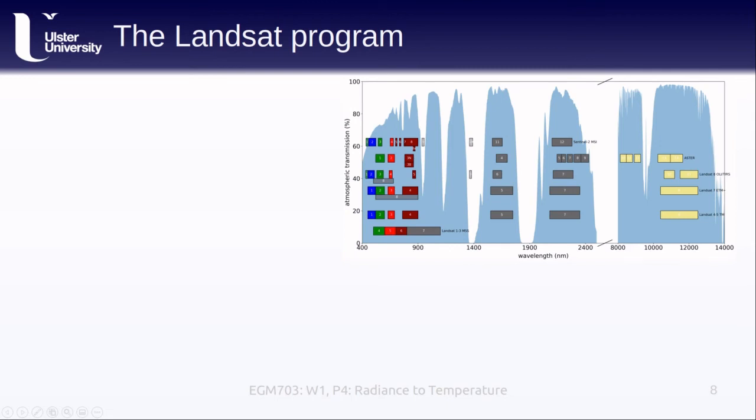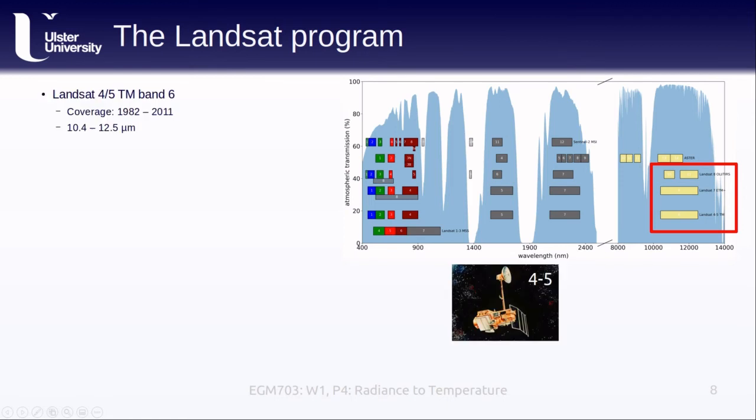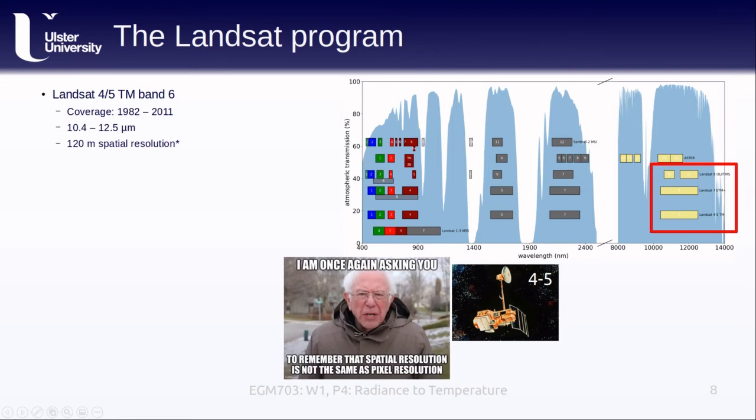We've worked with Landsat data before, but I thought it might be worth it to revisit the thermal infrared bands specifically. The first Landsat sensor to feature a thermal band was the thematic mapper carried on both Landsat 4 and 5. The temporal coverage for these images ranges from 1982 to 2011, though the temporal resolution is often extremely variable. Band 6 of the thematic mapper acquired in the thermal infrared between 10.4 and 12.5 micrometers at 120 meters spatial resolution. And at this point, I would like to once again remind you that spatial resolution and pixel size are not the same thing. When you download Landsat data, the thermal bands have been resampled to 30 meters.